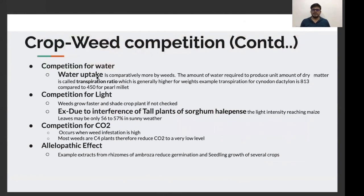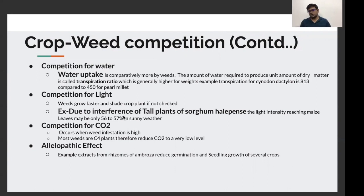As far as water uptake is concerned, we have a concept called transpiration ratio, which is the amount of water utilized to produce one unit of dry matter. Weeds such as Cynodon dactylon have a very high transpiration ratio — for example, Cynodon dactylon has a transpiration ratio of 813, whereas the associated crop pearl millet has just 450. You can see how much water a weed can waste. Light is another factor for which the weed competes with the crop — weeds grow fast and shade the undergrowing crops, reducing the light falling on them.